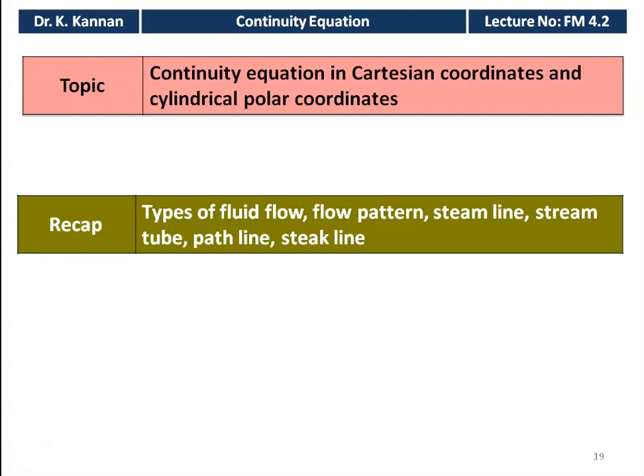We recap from the previous lecture. In the previous lecture, we studied about the types of fluid flow, flow pattern, streamline, stream tube, path line, and streak line. And in continuation to this, we derive the continuity equation in the Cartesian and cylindrical polar coordinates.